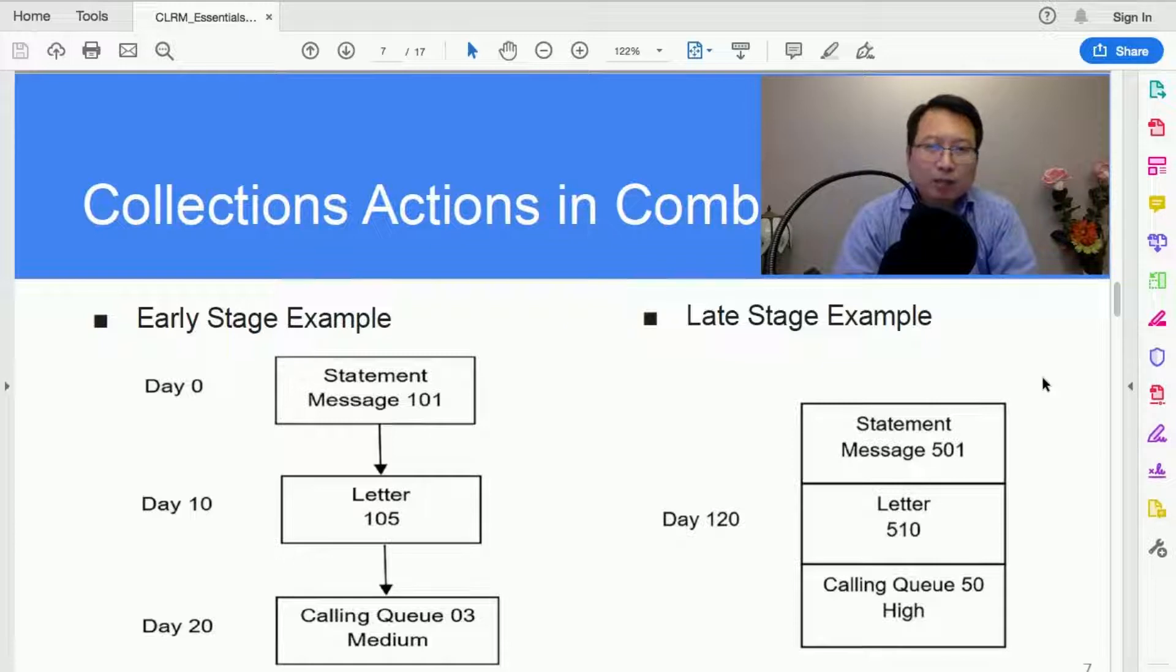Then you give the customer 10 days. In this example, if the customer still doesn't pay the minimum due, then on day 10 you send out a letter. Letter with ID 105 represents a certain verbiage.